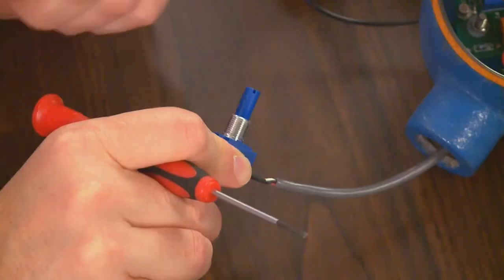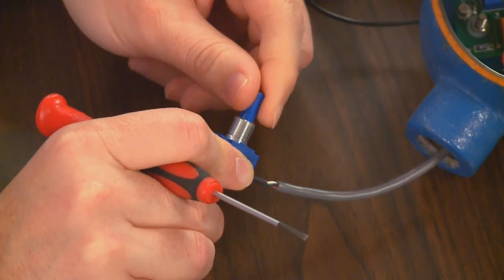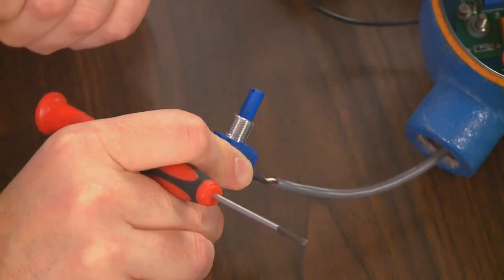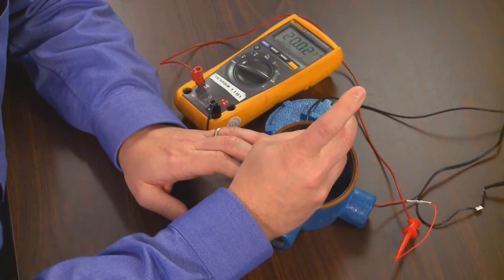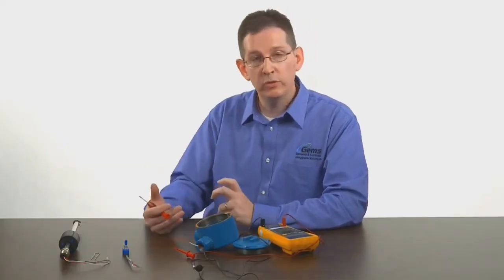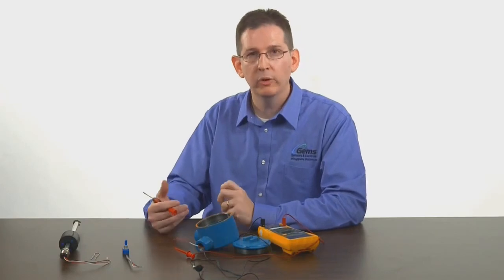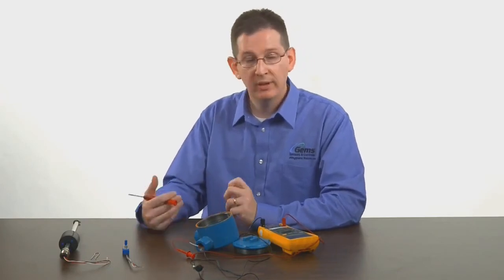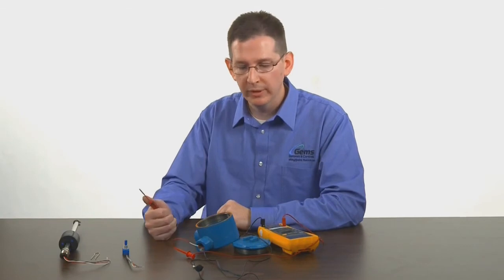If we bring the potentiometer fully clockwise, you'll notice that the output has actually changed. And we tweak that back towards the 20 milliamp point. As I said, doing that two or three times will pull that into your 4 and 20 points. Once you're done, your unit is fully calibrated.